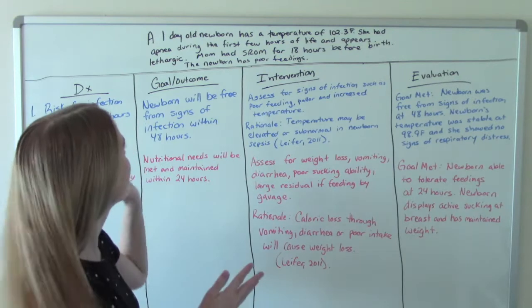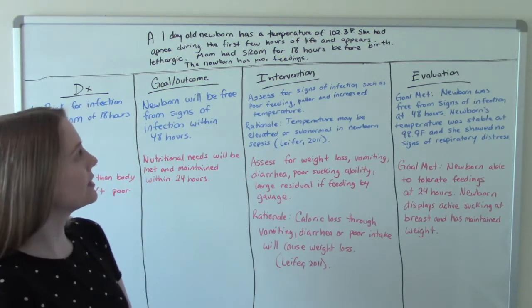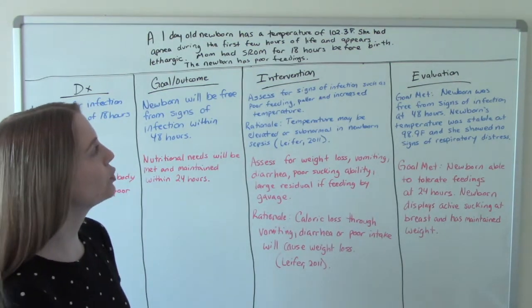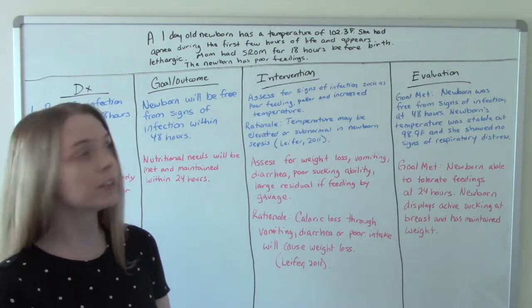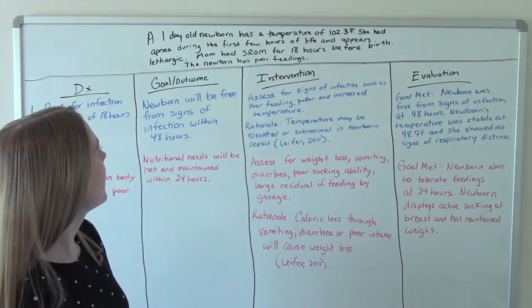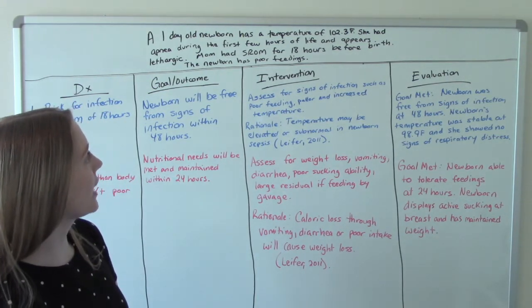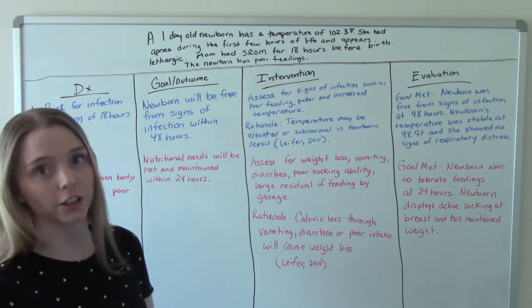So our baby is a one-day-old newborn who has a temperature of 102.3 degrees Fahrenheit. She had apnea during her first few hours of life and is appearing lethargic.